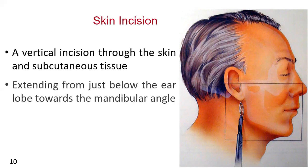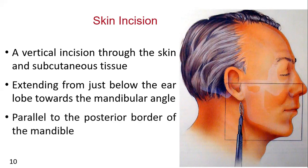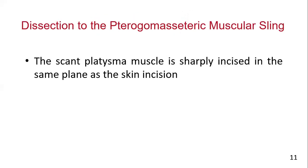The incision extends from just below the earlobe towards the mandibular angle and should be made parallel to the posterior border of the mandible. Undermining the skin with scissor dissection in all directions allows ease of retraction and facilitates closure. Hemostasis is then achieved with electrocoagulation of bleeding subdermal vessels. After retraction of the skin edges, the scant platysma muscle is sharply incised in the same plane as the skin incision.